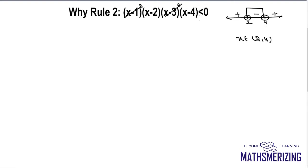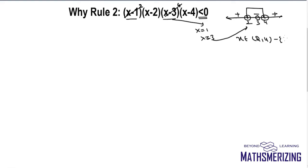Rule 2 says: because the inequality doesn't have an equality sign, we need to remove the real roots of the expressions removed in Rule 1 from the solution, if they are included. The two expressions removed in Rule 1 have critical points x equal to 1 and x equal to 3. Now 1 is not included in the solution, but 3 lies inside the interval, so I need to remove 3. The answer is: x belongs to from 2 to 4, except 3.